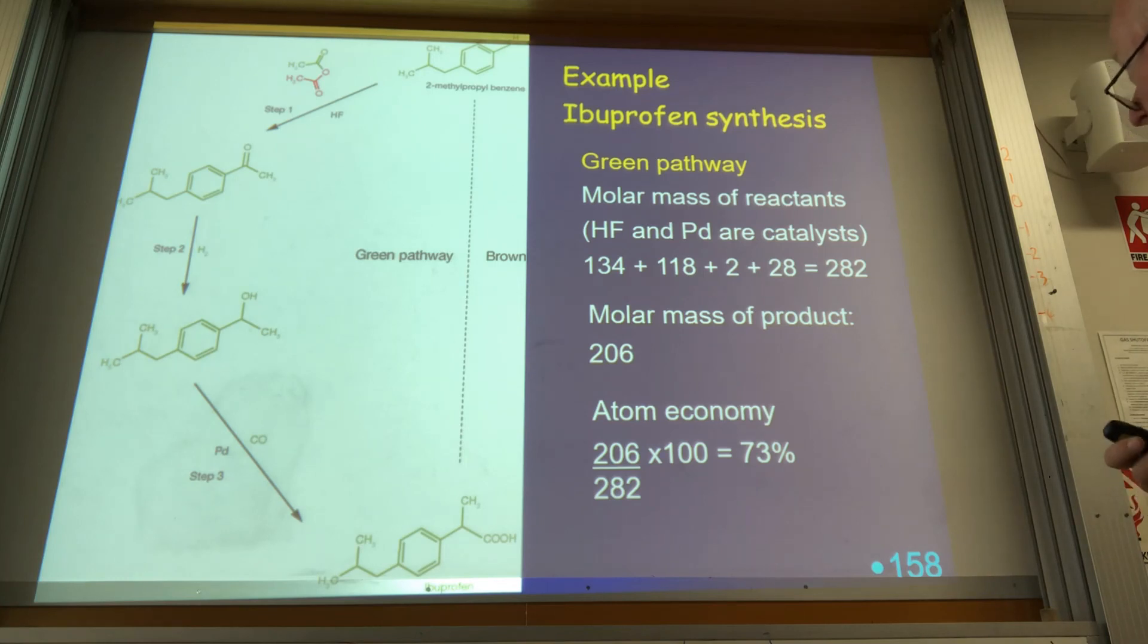So if we do that for the ibuprofen synthesis, the green pathway, we don't have that many reactants. That's a catalyst, so we ignore that, but this is one reactant, that's obviously the main reactant. We've got hydrogen there as well, and then we've got carbon monoxide. Palladium's a catalyst as well. So not many. There's that little bit there, that stuff in red gets wasted. So the molar mass of all the reactants together is 282, the molar mass of the ibuprofen that we want to make is 206. So our percentage atom economy is going to be 206, that's the ibuprofen, divided by 282, that's all of the reactants. And we get 73 percent. That's pretty good for a reasonably complex synthesis.